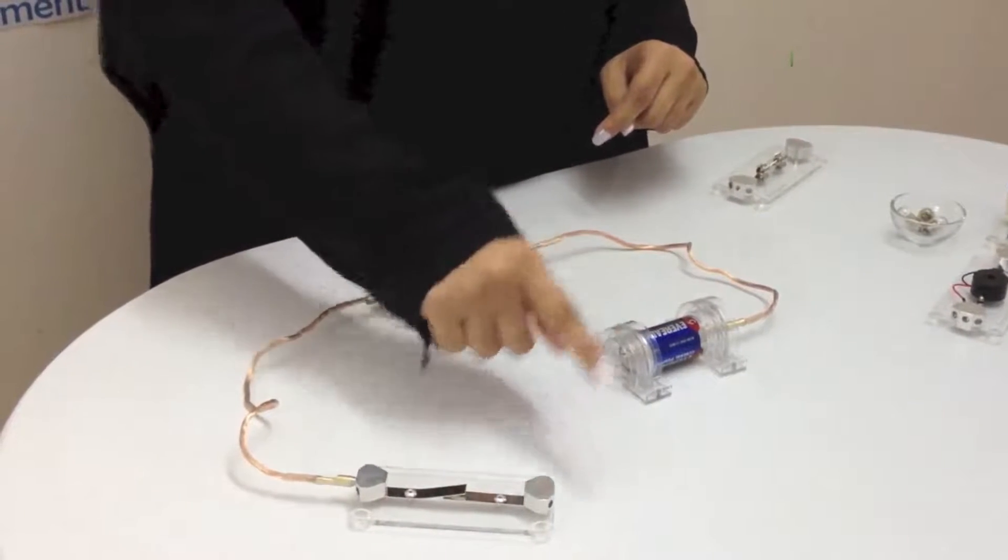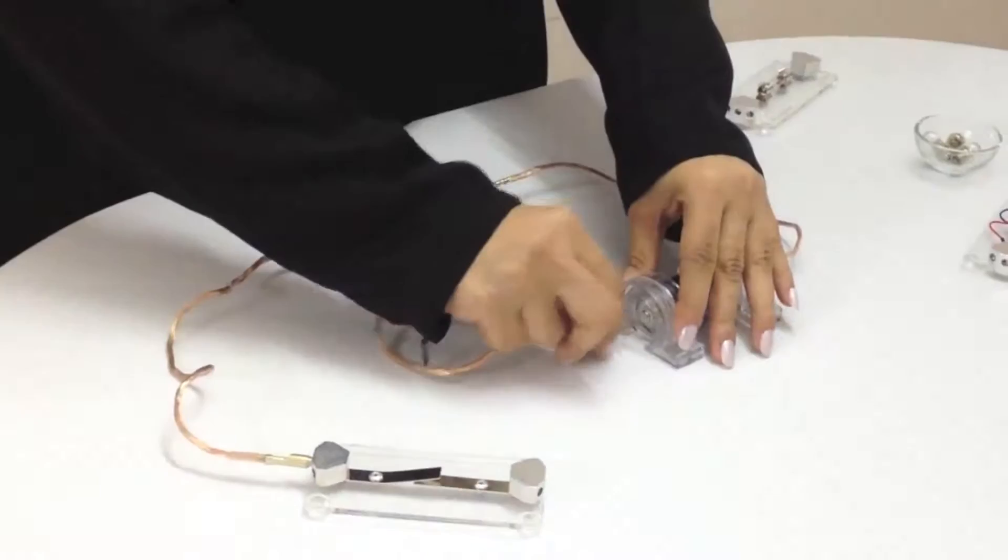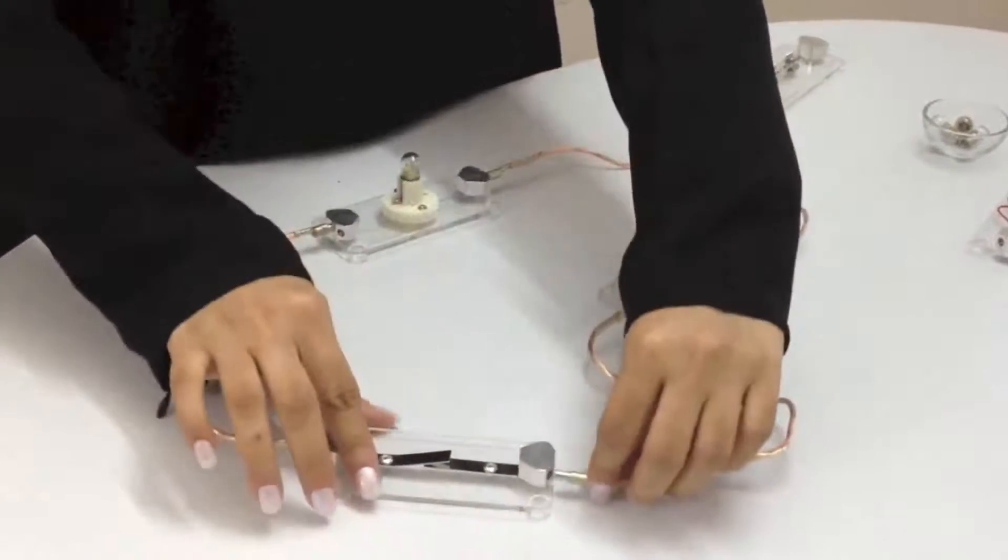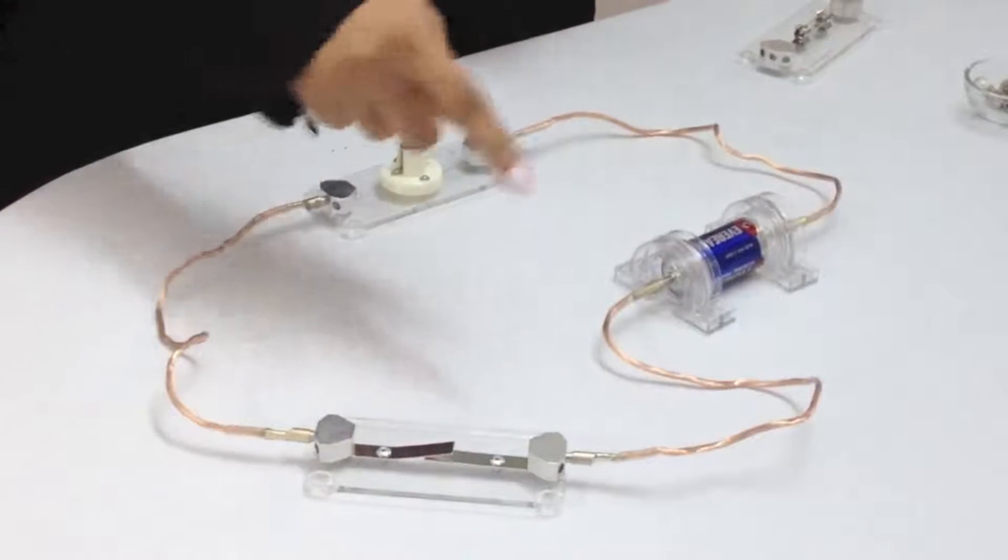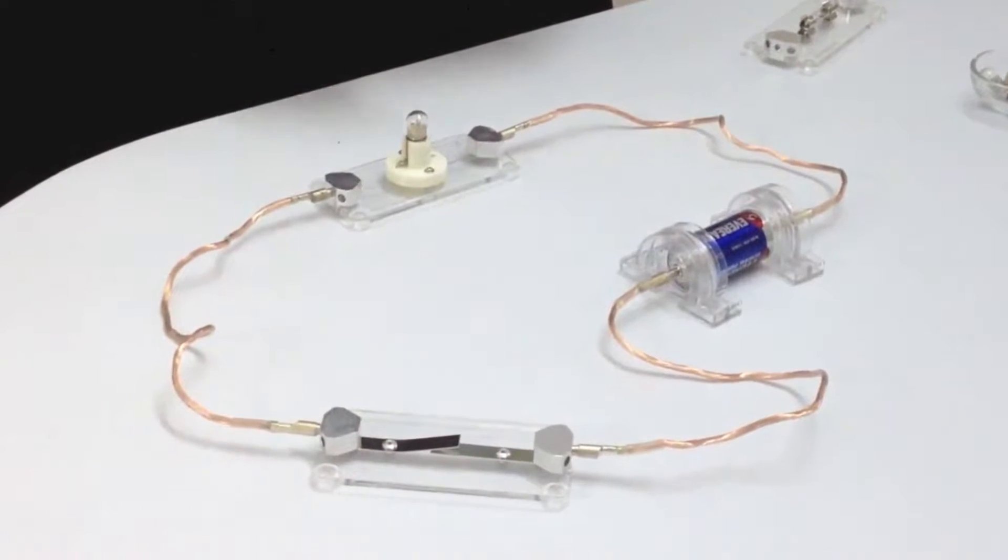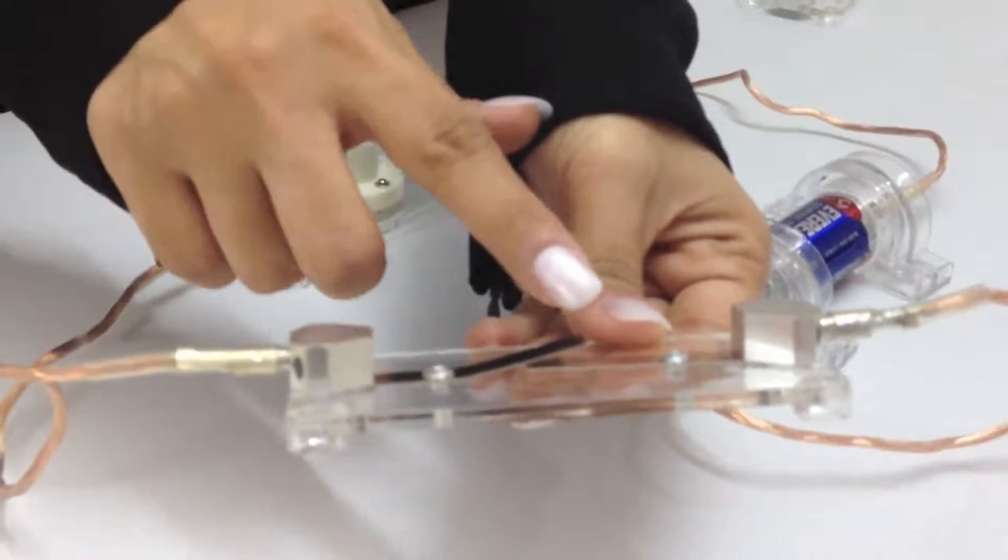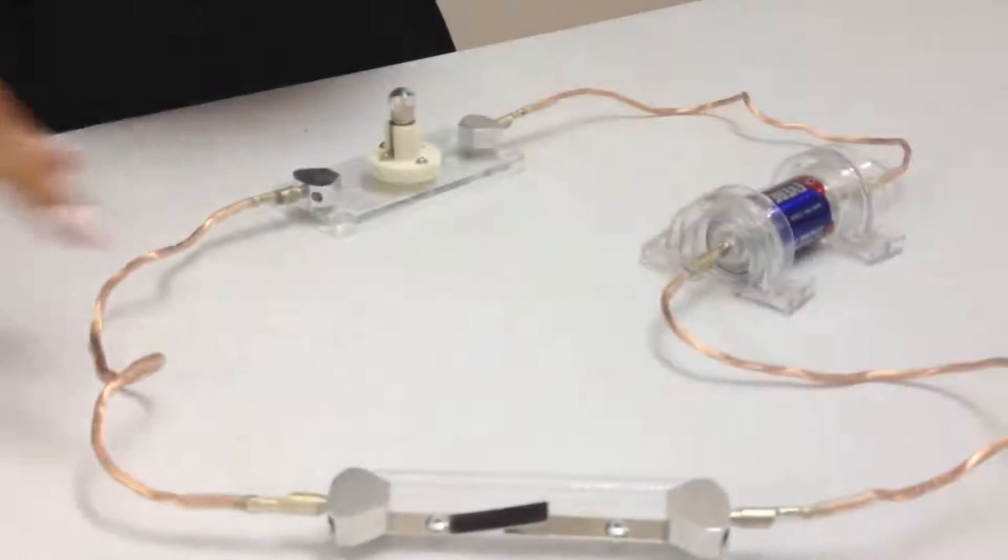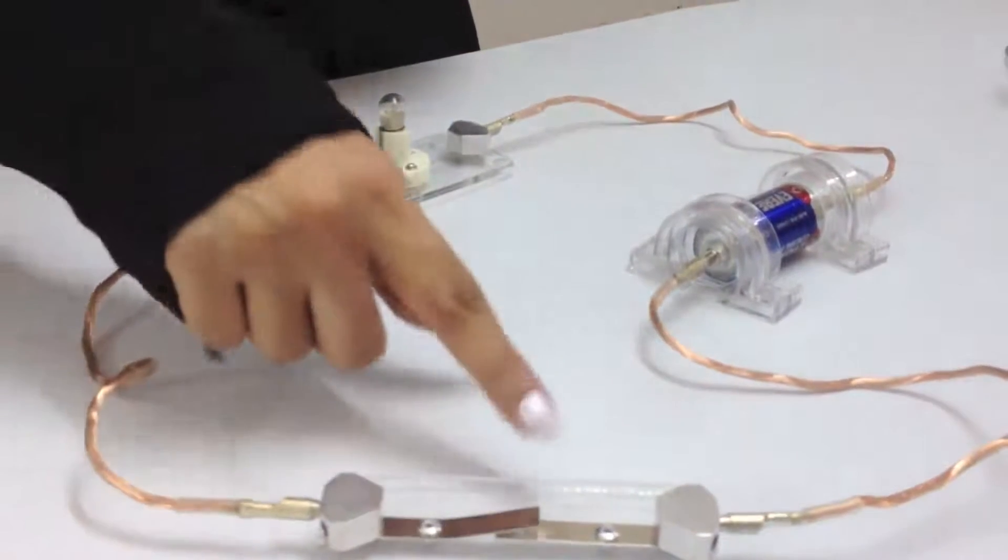This wire will go from the battery to the switch. Now when I press it on top and join both plates, the circuit connects.